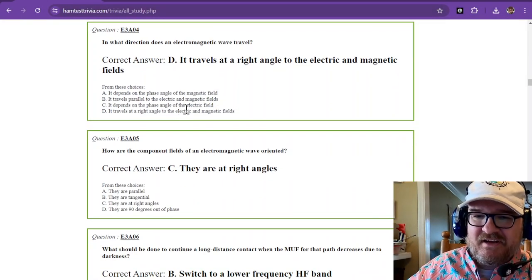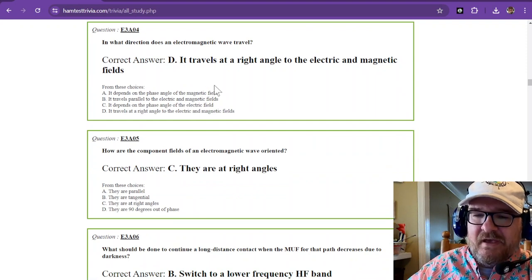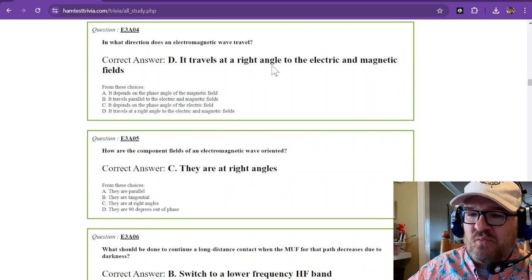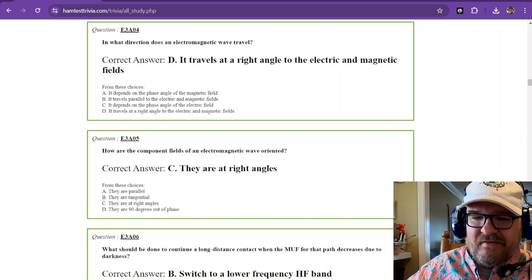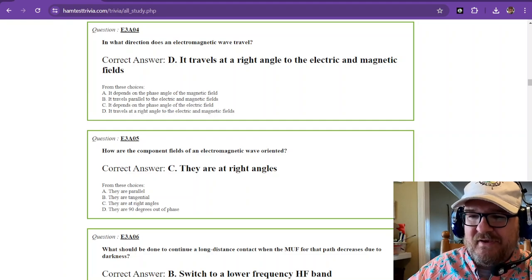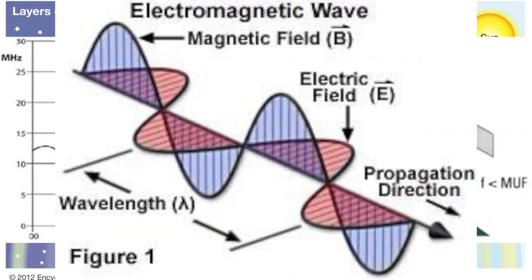In what direction does an electromagnetic wave travel? It travels at a right angle to the electric and magnetic fields. And the electromagnetic fields are at right angles to each other. The magnetic field is at a right angle to the electric field. But then, you can see the direction of propagation. And the E field, I believe, is the polarization. So this must be a horizontally polarized antenna, but you can see what direction that propagates in.